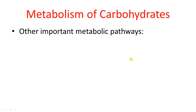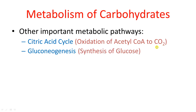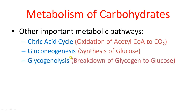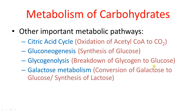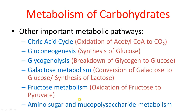Other metabolic pathways include: the citric acid cycle, which involves oxidation of acetyl coenzyme A to carbon dioxide; gluconeogenesis, meaning regeneration of glucose within the body; glycogenolysis, which is the breakdown of glycogen to glucose; galactose metabolism, where galactose is converted to glucose or used in lactose synthesis; fructose metabolism, where fructose is oxidized to pyruvate; and amino sugar and mucopolysaccharide metabolism.